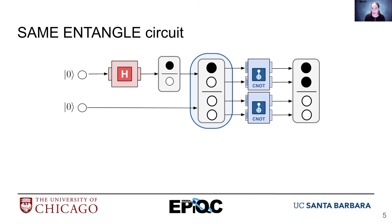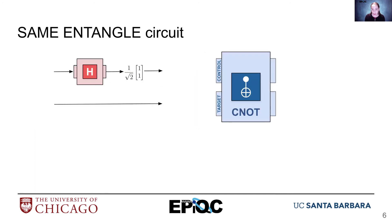We can confirm this is entangled by finding that there are no individual states of bits that, if you do the tensor product to multiply it out into a multi-bit state, could ever look like this. That's how we know we have entanglement.